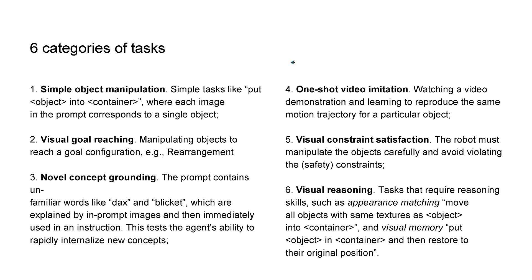There are six categories of tasks the system was trained on: simple object manipulation, manipulating objects to reach a goal configuration given by an image, novel concept grounding where imaginary words in the prompt are explained by in-prompt images, one-shot video imitation, visual constraint satisfaction, and the most interesting — visual reasoning tasks such as appearance matching or visual memory.